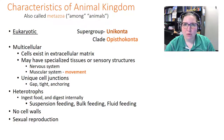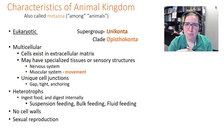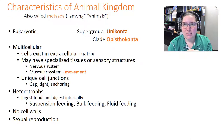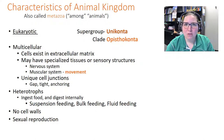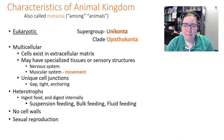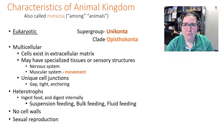Animals have unique cell junctions: gap junctions allow ions to cross between cells, tight junctions (also called occluding junctions) prevent flow of material between cells, and anchoring junctions structurally spot-weld cells together. Animals are also heterotrophic — they cannot make their own food and instead ingest and digest it internally.